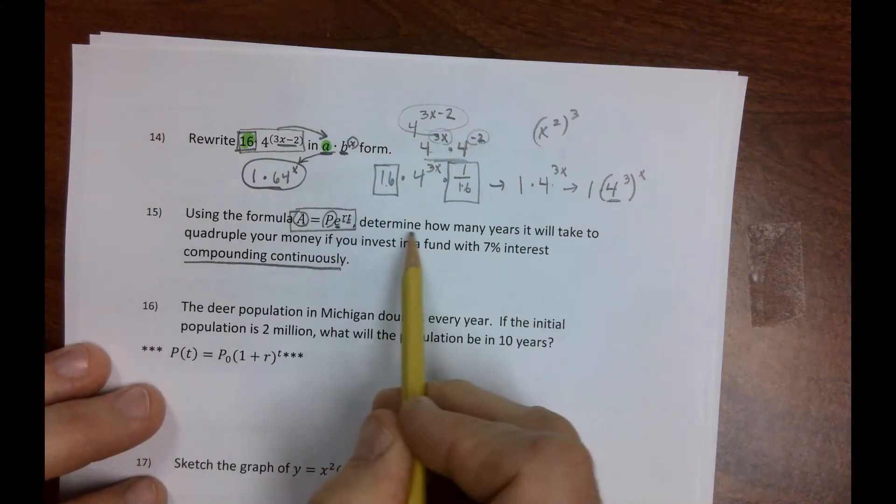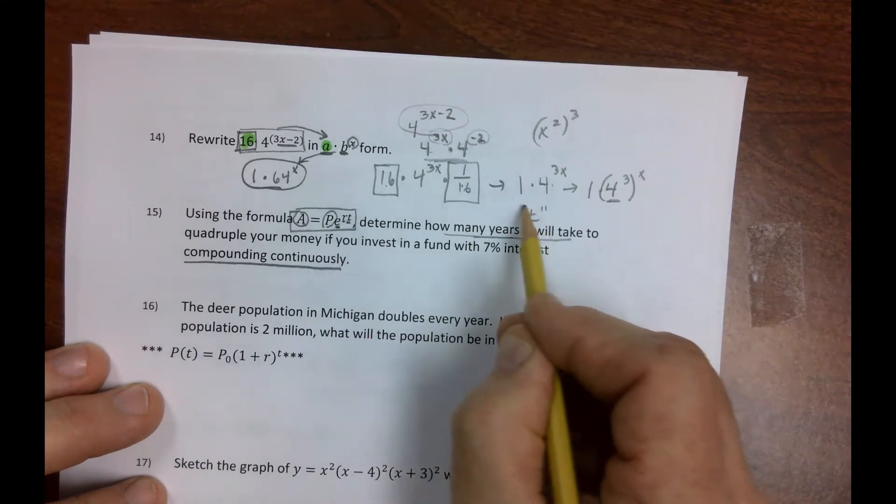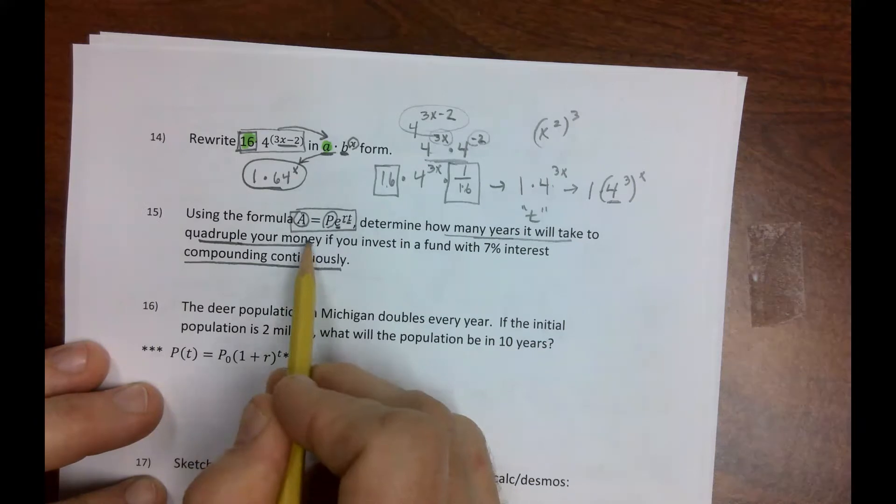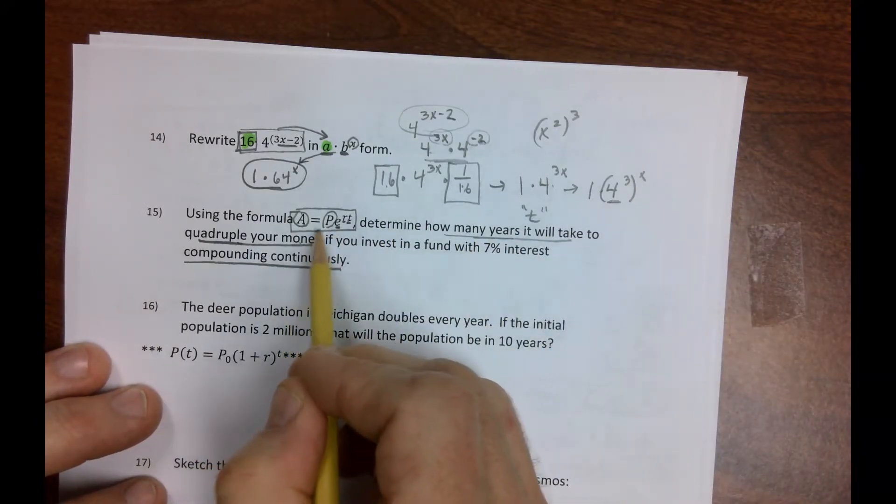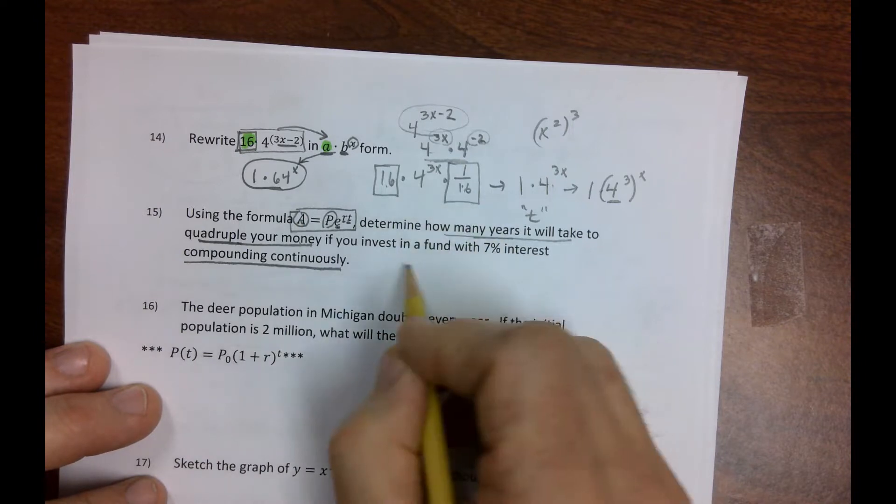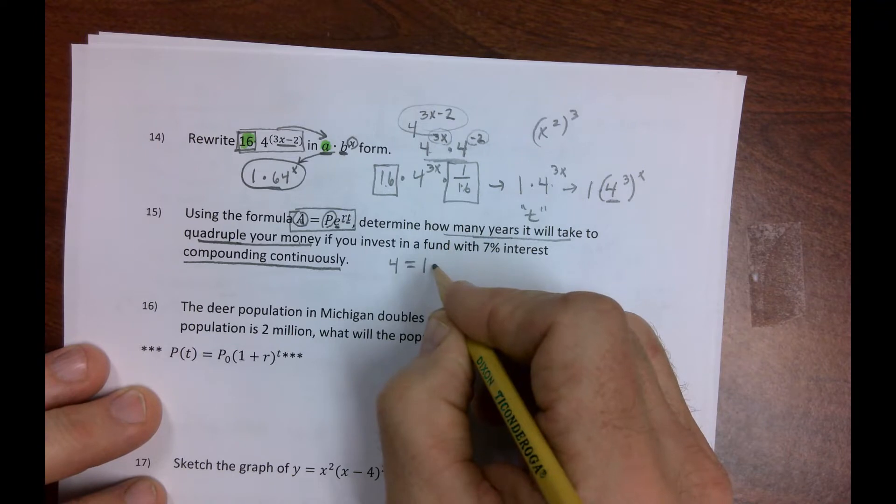So let's read this. How many years will it take, so they're saying find T, to quadruple your money? Now here's something interesting. They don't tell us how much we invest. So you have to be a little creative. You could put $10,000 in here and then $40,000. You could put $100,000 and then you'd have $400,000. I'm just going to keep it easy and keep it four, like I invested $1. Because the ratio is the same.